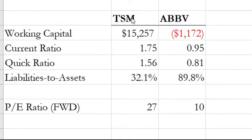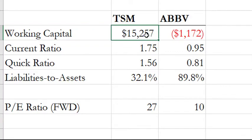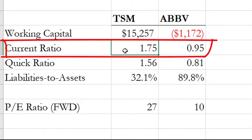Let's look at two companies: Taiwan Semiconductor Manufacturing Company (TSM) and AbbVie (ABBV). In terms of liquidity, TSM has about 15 billion dollars of working capital, while ABBV has roughly negative one billion. We can't directly compare due to different company sizes, but the current ratio shows TSM covers its current liabilities 1.75 times, whereas ABBV's current liabilities are actually greater than its current assets.